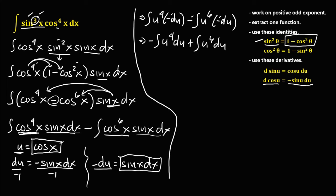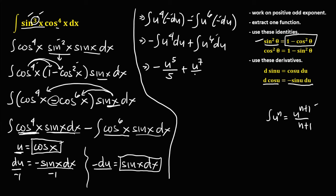Using the power rule of integration — the integral of uⁿ = uⁿ⁺¹ / (n+1) — we get: negative u⁵/5 plus u⁷/7 plus C.